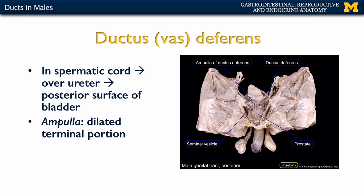Continuing with the ductus deferens — after the dilated portion of the epididymis, the name changes to the ductus deferens. This travels within the spermatic cord, which is within the scrotum. The spermatic cord travels through the inguinal canal, and then we move internally, passing over the ureter. Eventually it ends up in what we refer to as the ampulla of the ductus deferens — the dilated, most distal portion of the ductus deferens.